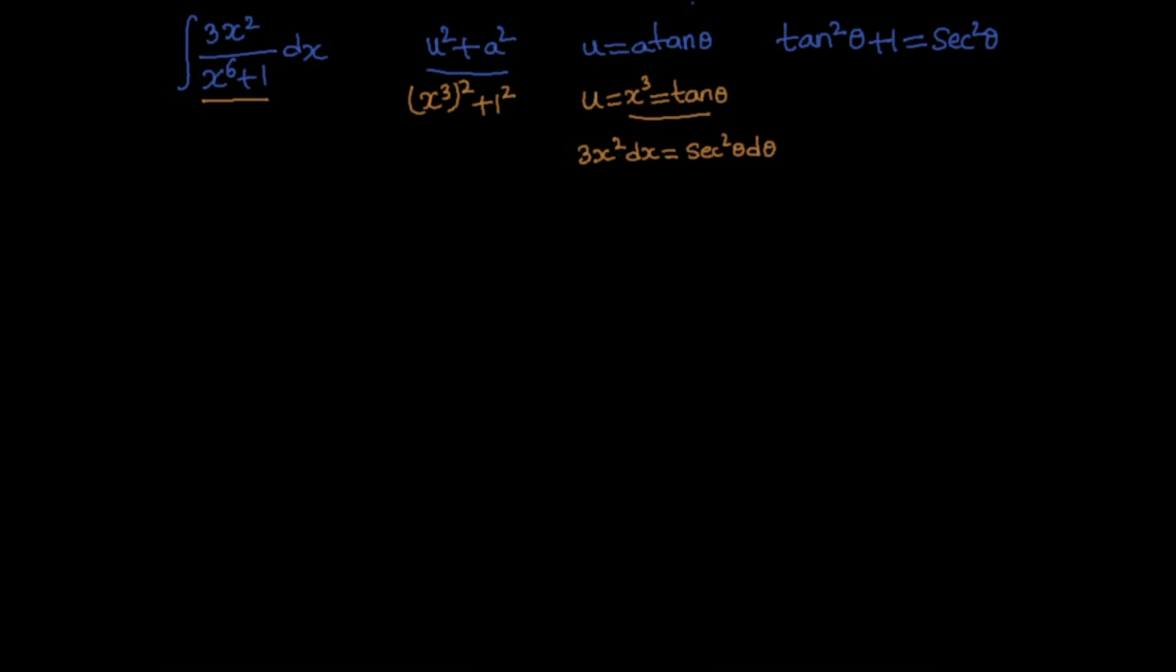So now let's start solving this integral. You have 3x square by x power 6 plus 1 dx. So here in place of 3x square dx you can substitute secant square theta d theta. So you can write this expression as secant square theta d theta divided by tan square theta plus 1.